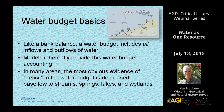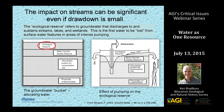A water budget is like a bank balance — all inflows and outflows must balance. Hydrogeologists use computer models to do this water budget accounting. In many parts of the world, a water budget deficit is expressed as decreased flow to surface water features like lakes, streams, and wetlands. You don't get something for nothing in the groundwater world — any time we pump a well, that water would have ended up somewhere else, usually in a lake, stream, or wetland.